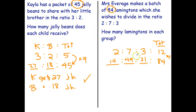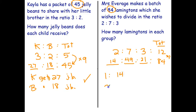Let's do a quick check: 49 plus 21 — 40 plus 20 is 60, 9 plus 1 is 10, 60 plus 10 is 70, 70 plus 14 is 84. That checks out. So group one gets 14, group two gets 49, group three gets 21.